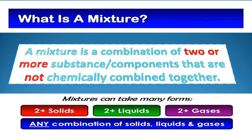But what have we formed when we combine or mix two or more matter together? A mixture is a combination of two or more substances or components that are not chemically combined together. It can take many forms: adding two solids, adding two liquids, adding two gases, or any combination of solids, liquids, and gases.